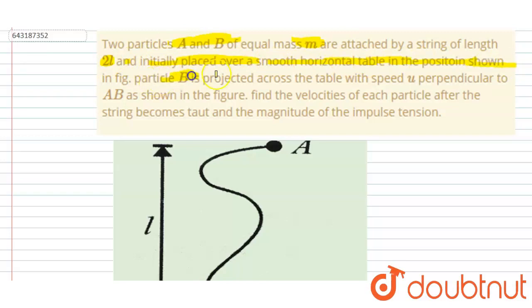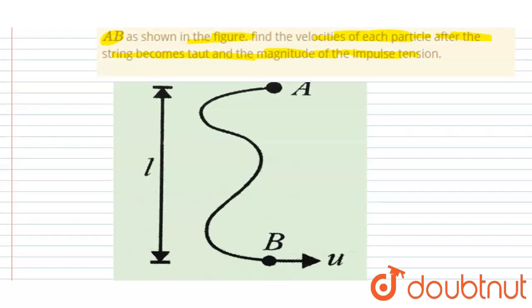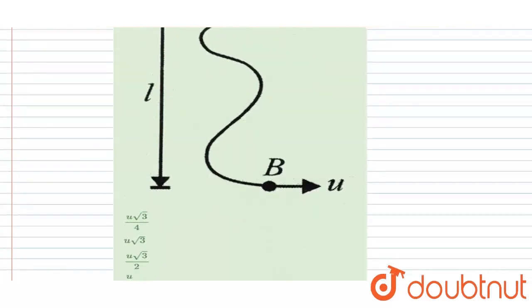B is projected across the table with speed u perpendicular to AB as shown in the figure. Find the velocity of each particle when the string becomes taut, and the magnitude of the impulse of the tension.